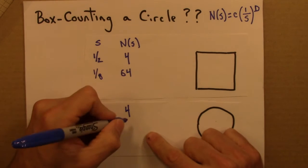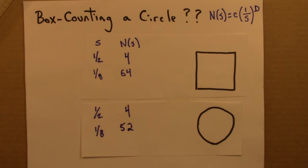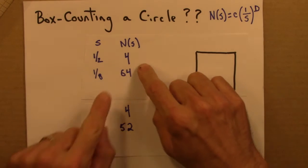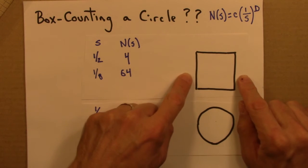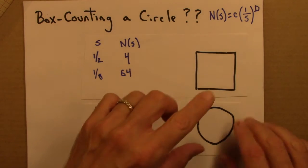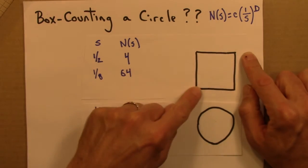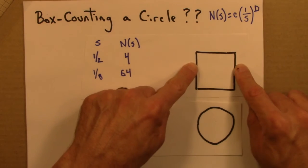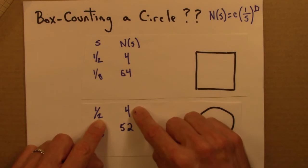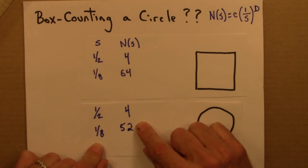Let's write that down and see the problem. For the square: 2² = 4 and 8² = 64 — two-dimensional, consistent. The circle is two-dimensional too, so we'd expect the same pattern. 2² = 4 — that looks right. But 8² is 64, not 52. So why does this seem to not work?